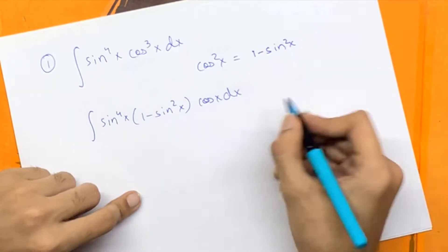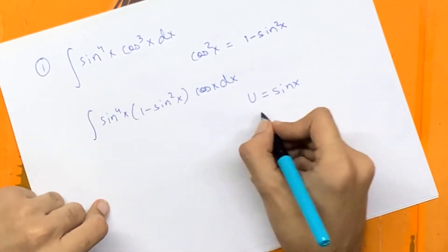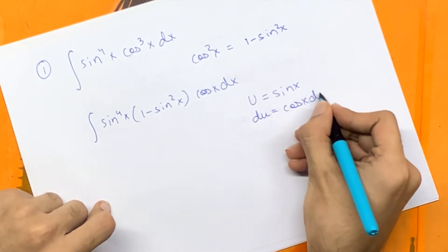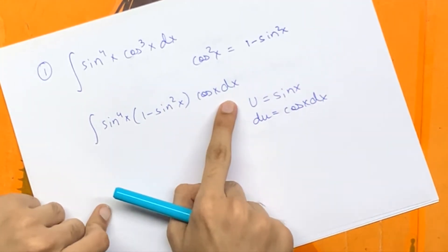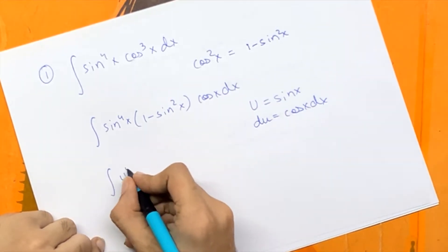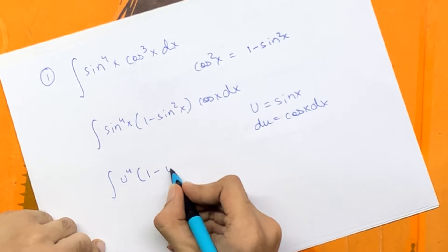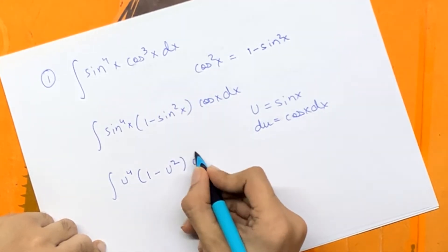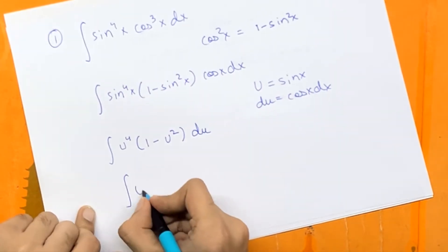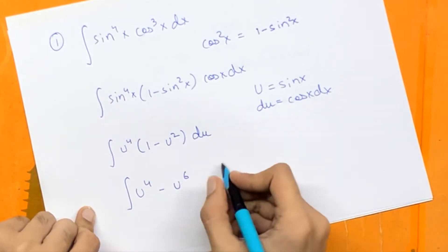Let's use some u substitution. Differentiating both sides, we have du is equal to cos x dx, and we can substitute that in nicely. So we have u to the power 4 times 1 minus u to the power 2 times du. That gives us the integral of u to the power 4 minus u to the power 6 times du.